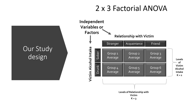Past researchers also found that alcohol intake impacts perceptions of victims. So we manipulated both the relationship our participants had with the victim — they read a vignette and imagined the victim was either a friend, an acquaintance, or a stranger — and we also manipulated the alcohol intake of the victim, depicted as either intoxicated or sober. Our first factor, relationship with the victim, had three levels: stranger, acquaintance, and friend. Our second factor, victim alcohol intake, had two levels: drunk and sober.